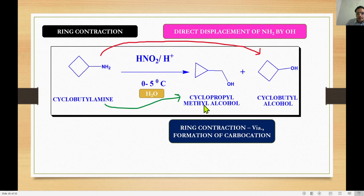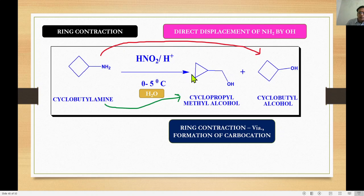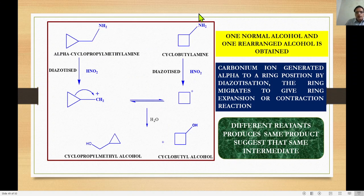In the case of cyclobutylamine, Demjanov rearrangement results in cyclopropylmethyl alcohol and cyclobutyl alcohol as products. Cyclobutyl alcohol is the non-rearranged (direct) product and cyclopropylmethyl alcohol is the rearranged product. Carbocation formation and sigma bond migration still occur; the absence of CH₂ leads to ring contraction instead of expansion.